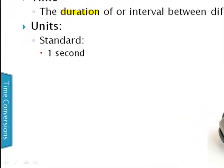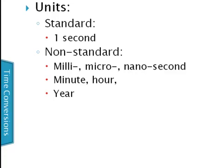Here are some other non-standard units of time. Seconds can be broken down into milliseconds, or on a stopwatch, into hundredths of seconds. Going even further, microseconds are times 10 to the negative sixth, and nanoseconds are times 10 to the negative ninth — billionths of seconds. Nanoseconds are relevant for electronics, since many computers operate on that timescale. Of course, there are also minutes, hours, and years. I'll show you a list of conversions — pause and record any you might find useful.